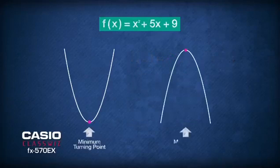The minimum or maximum value of a quadratic function can be easily found from the completed square form of the function. But how do we complete the square?